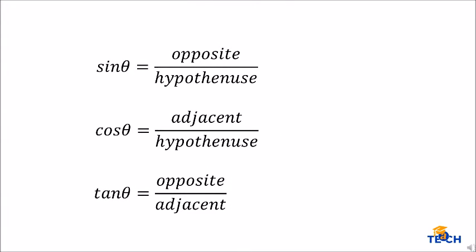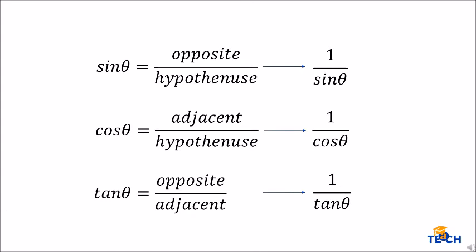Let's proceed to the reciprocals of the primary trigonometric functions. For sine theta, the reciprocal is 1 over sine theta. For cosine theta, it is 1 over cosine theta. And for tangent theta, it is 1 over tangent theta.